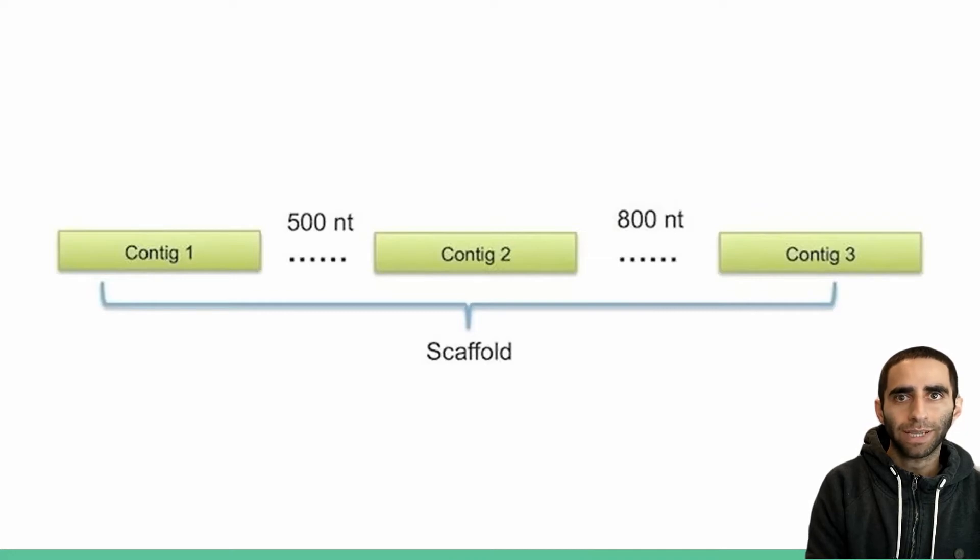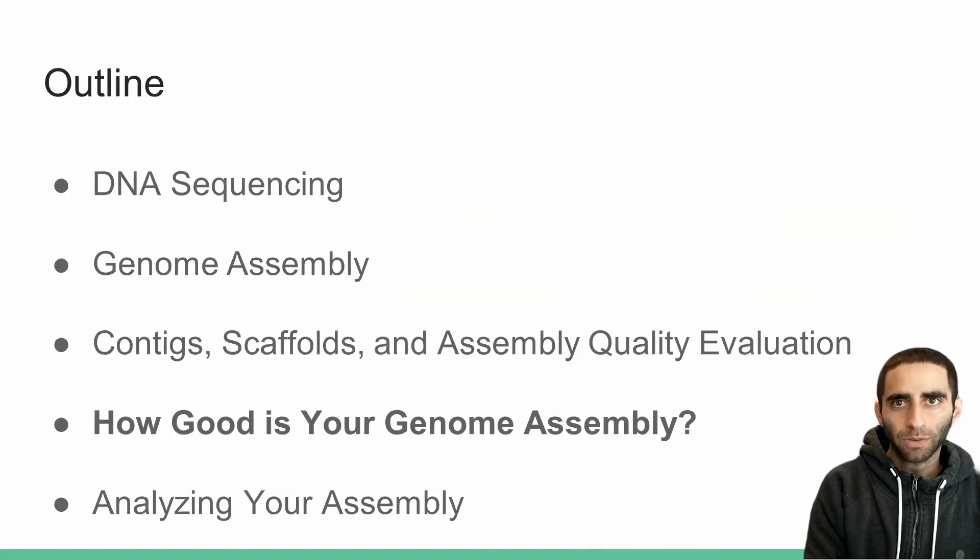Existing assemblers are able to estimate the space between the contigs of a scaffold. Okay, so we've run our genome assembly tool, and now we have our contigs and our scaffolds. What do we do next? How can we assess the quality of our genome assembly?